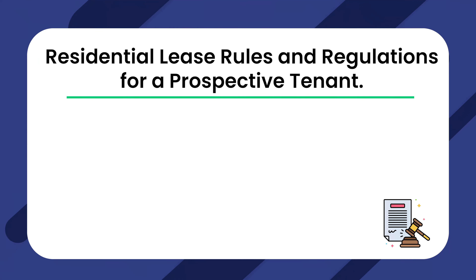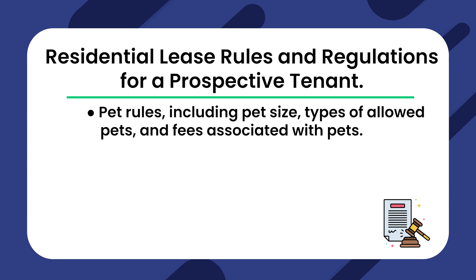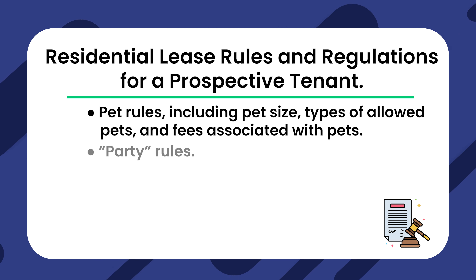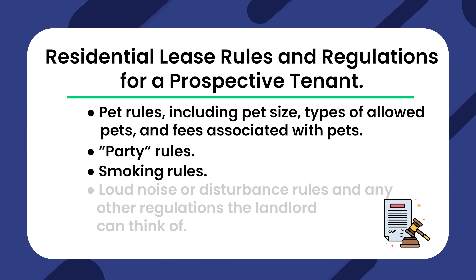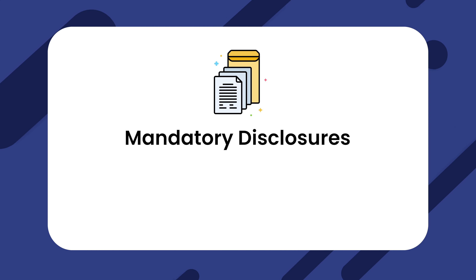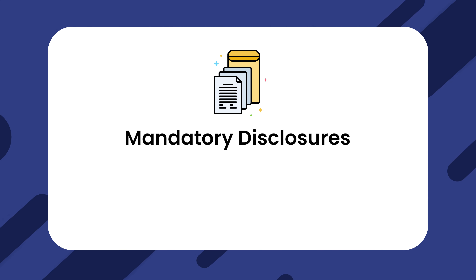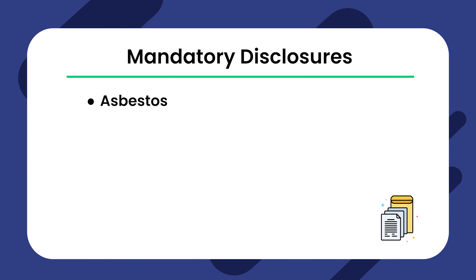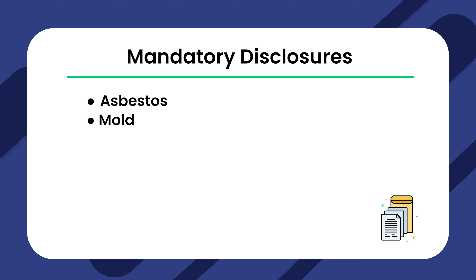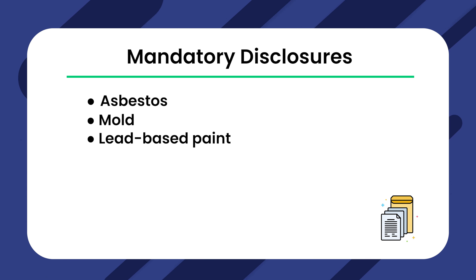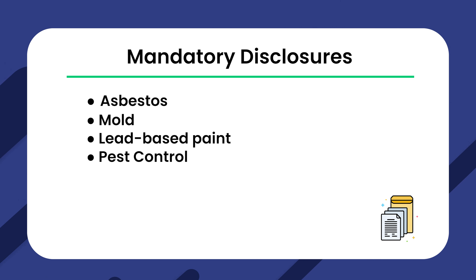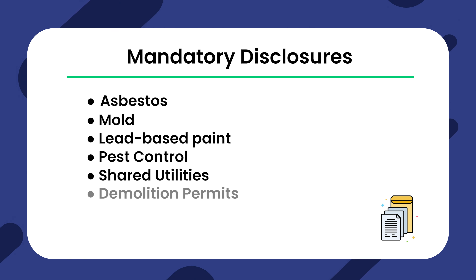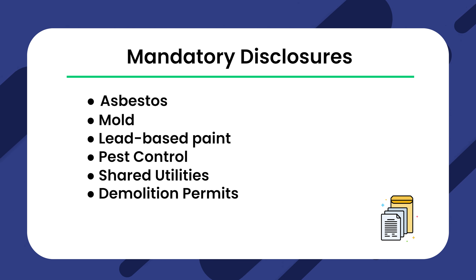Your lease agreement can include a wide range of rules for the tenant, like pet rules, party rules, smoking rules, and more. There are also mandatory disclosures that need to be included, such as potential asbestos exposure, mold presence, lead-based paint, pest control sessions, shared utilities, demolition permits, and other specific situations.